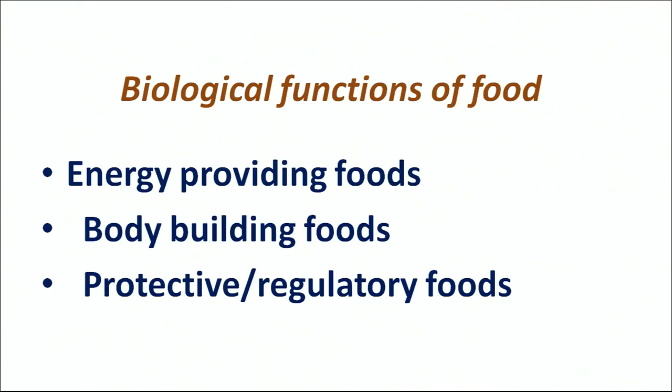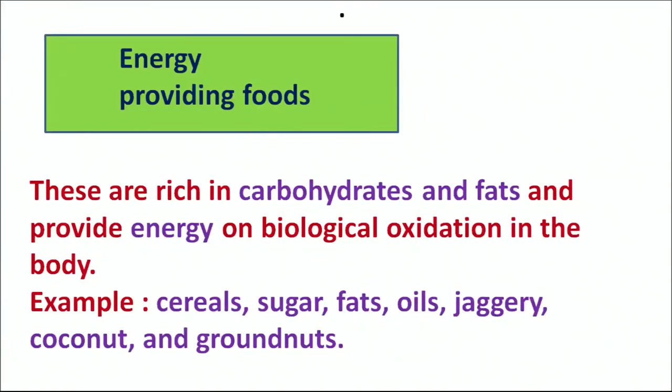Now we come to the biological classification of food — that is, classification based on the functions which food performs in our body. Food is divided into three categories: energy-providing foods, body-building foods, and protective or regulatory foods. Energy-giving foods include carbohydrates and fats; their basic purpose is to provide energy to the body through biological oxidation. Examples are cereals, sugars, fat, jaggery, groundnut, and coconut.